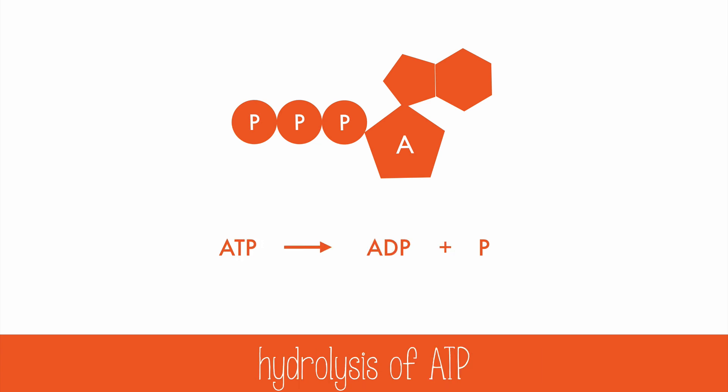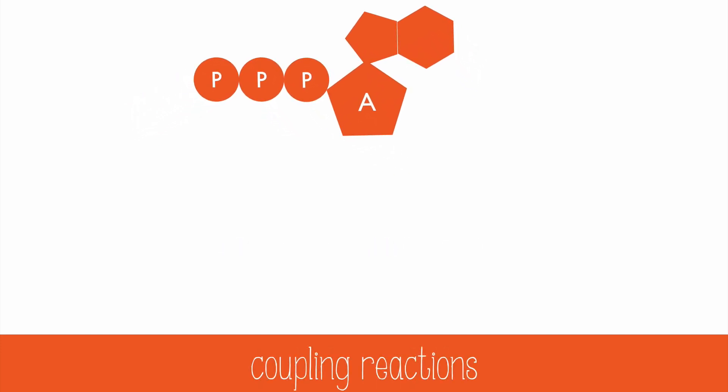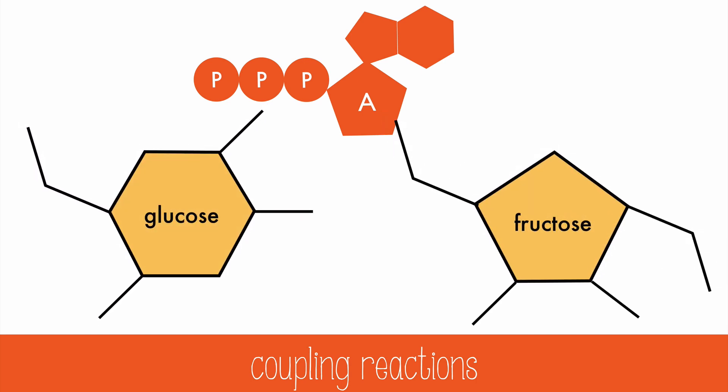The hydrolysis of ATP to ADP is exergonic, meaning energy is released when the bond breaks. Many other reactions in the body are endergonic and require added energy to begin the reaction. So, ATP is coupled with these endergonic reactions to provide the activation energy to make the reactions occur spontaneously.